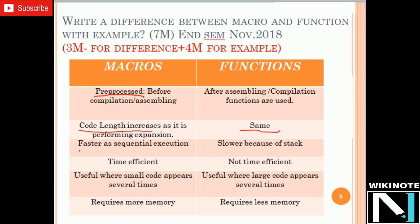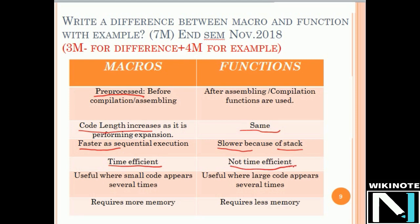Third: since we are expanding our program with macros, execution becomes faster because the entire execution takes place sequentially. But in the case of a function, execution becomes slower, because when calling a function we have to push the value of the next instruction onto a stack. Because of the involvement of a stack, function execution is slower. So macros are time-efficient and functions are not time-efficient.